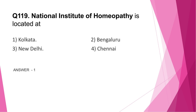Question number 119: National Institute of Homeopathy is located at — Kolkata, Bengaluru, New Delhi, or Chennai? The correct answer is option 1, Kolkata. Also make note of the places where other national institutes like National Institute of Unani, National Institute of Siddha, etc. are located.